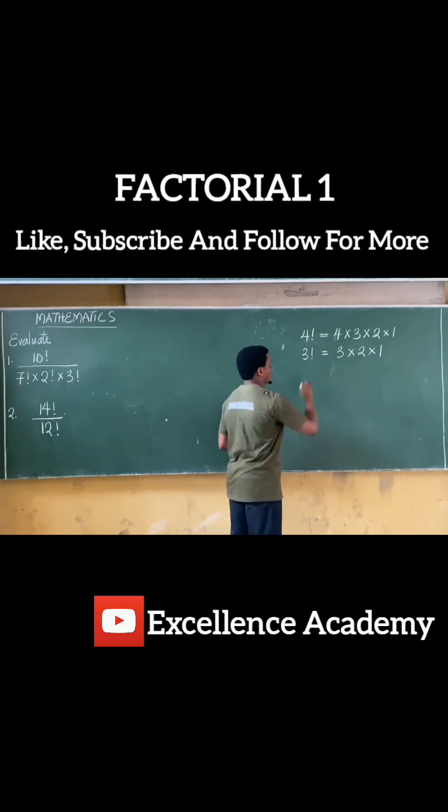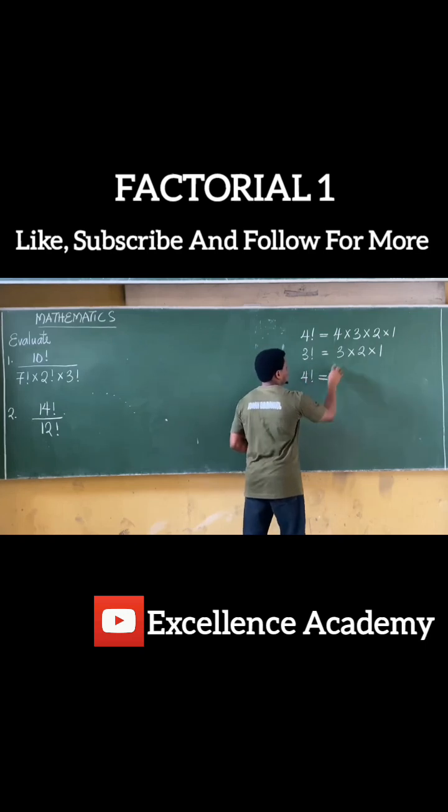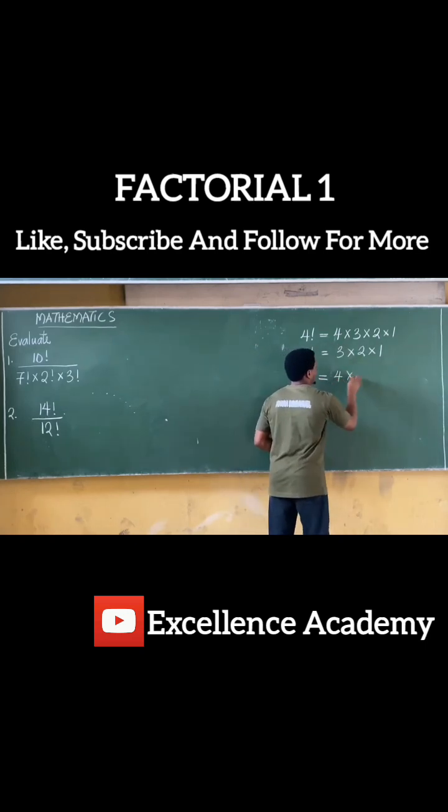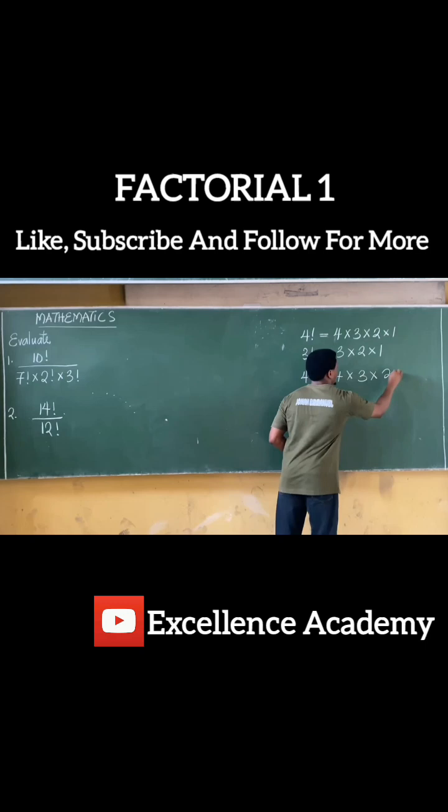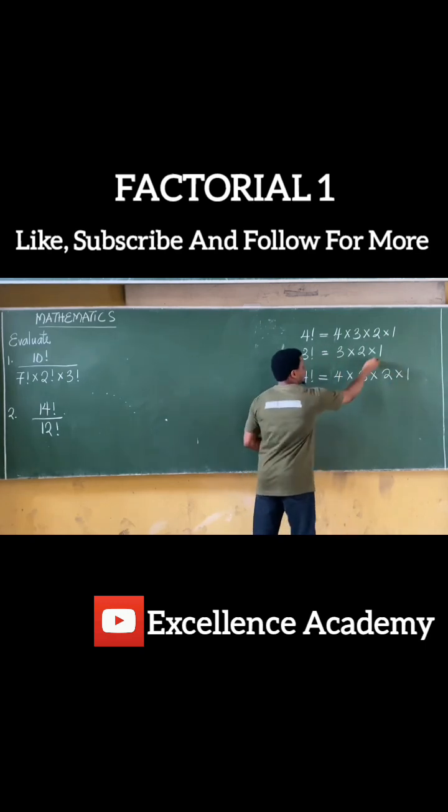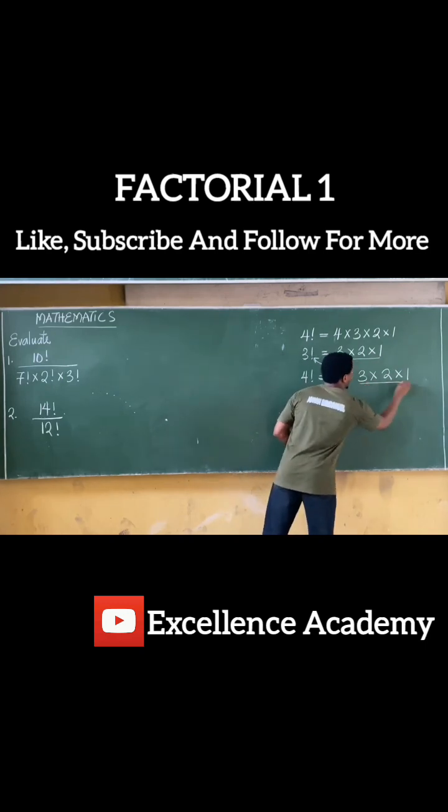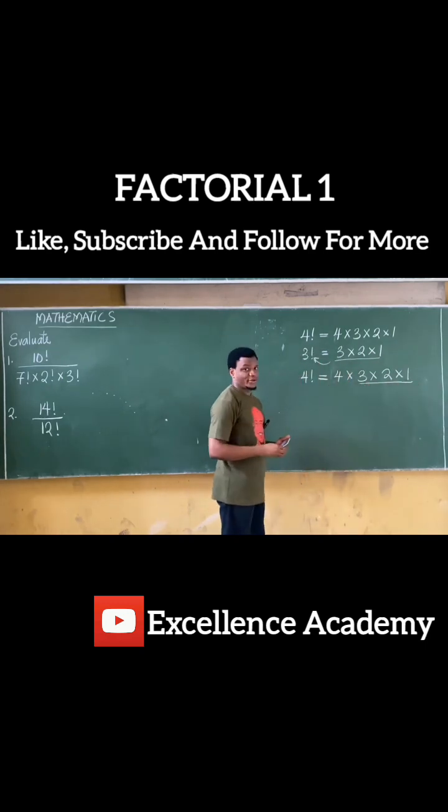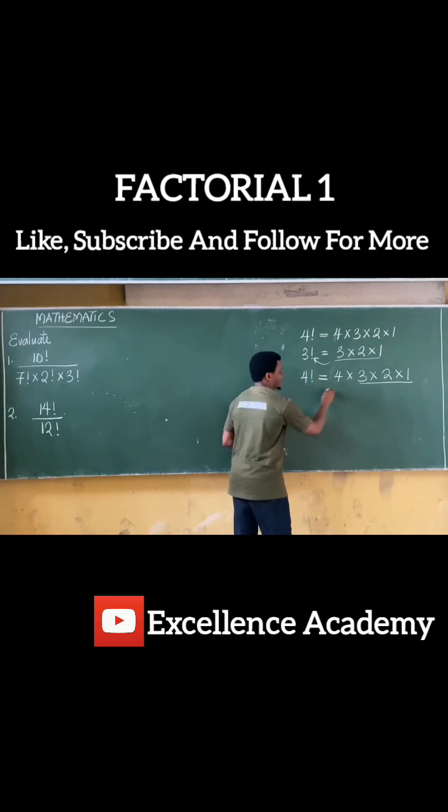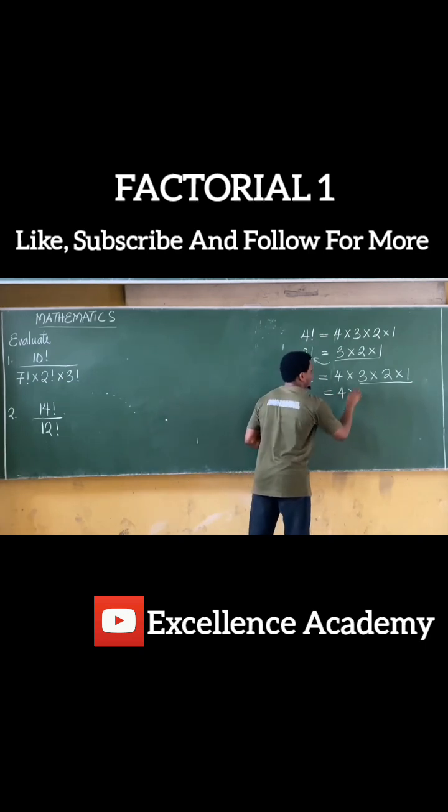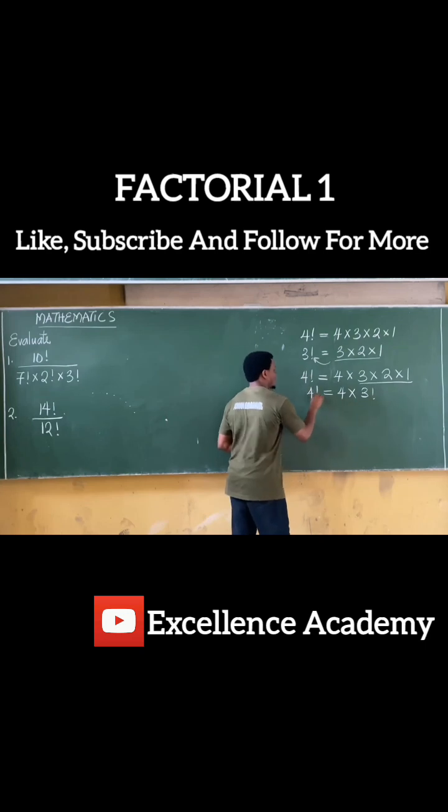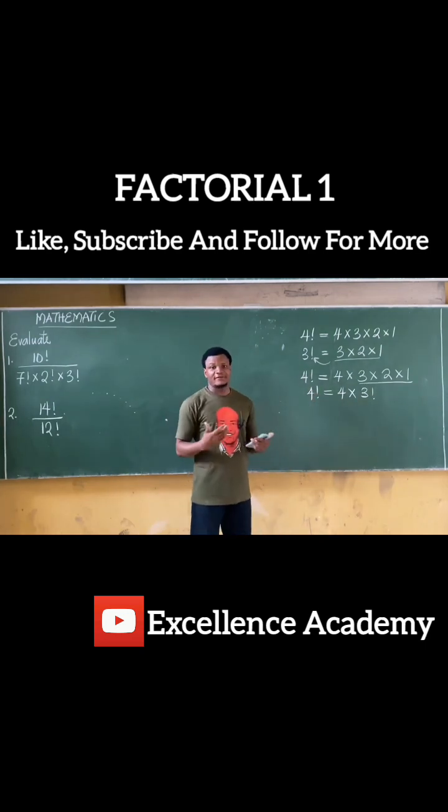Now, if you observe this clearly, we can see that 4 factorial is equal to 4 times 3 times 2 times 1. But we already said 3 times 2 times 1 is the same thing as 3 factorial. In essence, all of this is simply 3 factorial. That means 4 factorial is equal to 4 times 3 factorial. So 4 factorial is 4 times 3 factorial.